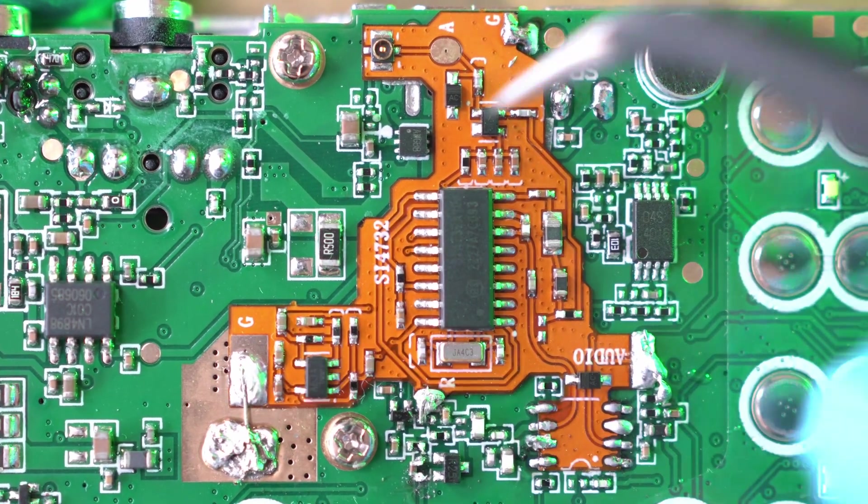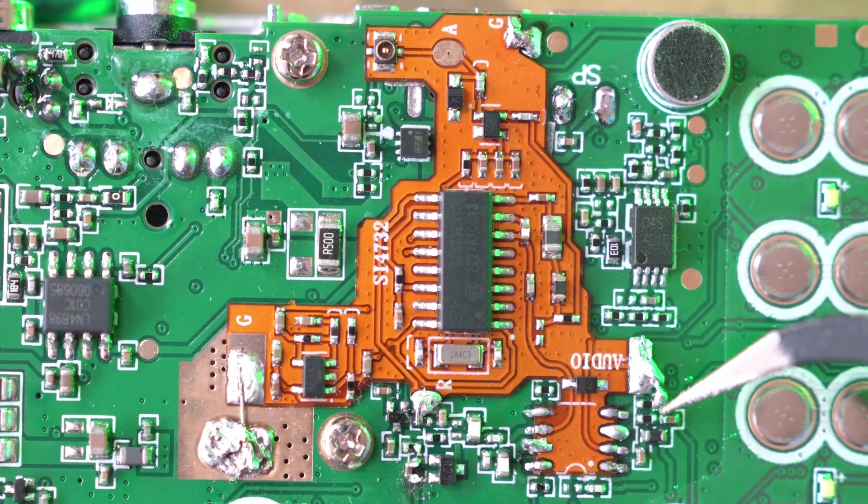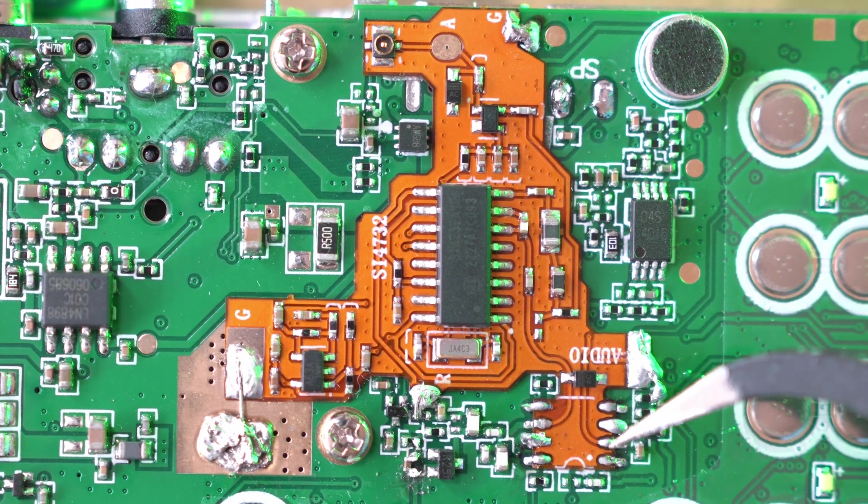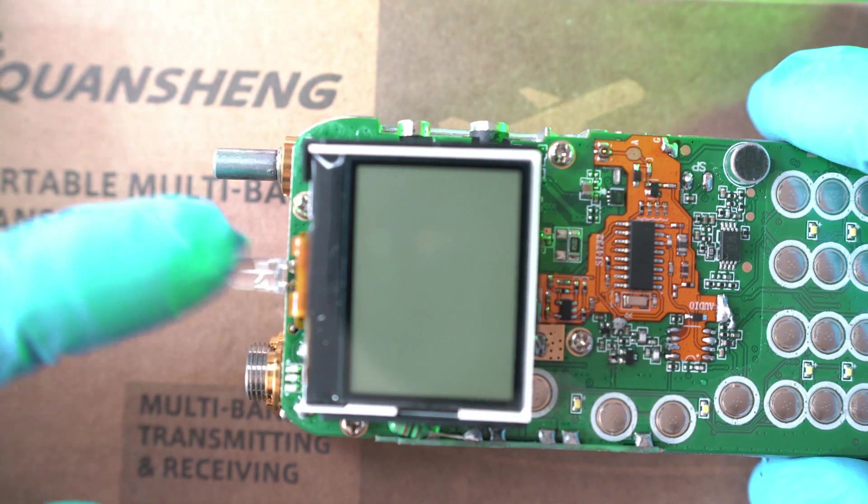Alright, recap. We soldered ground here and here. Also, jumped audio pad to here. Soldered all 8 legs of that X-chip and jumped R pad here. Done.